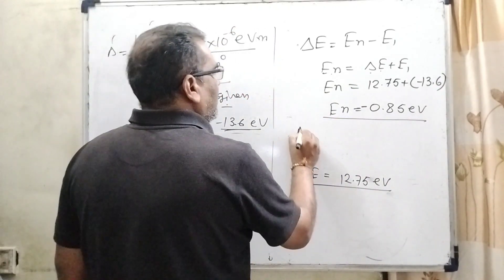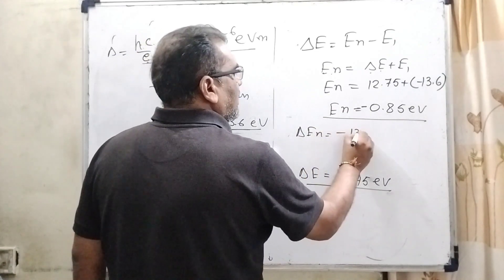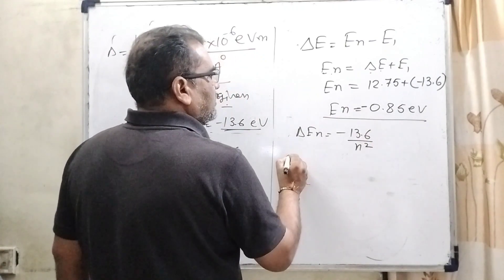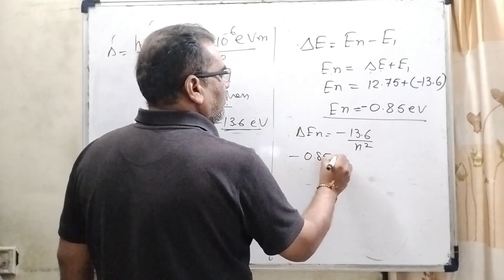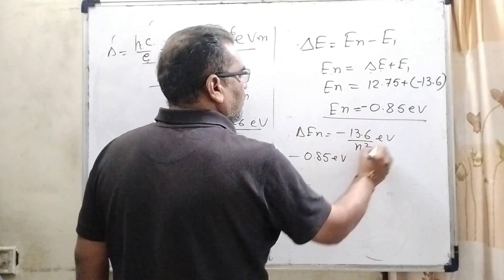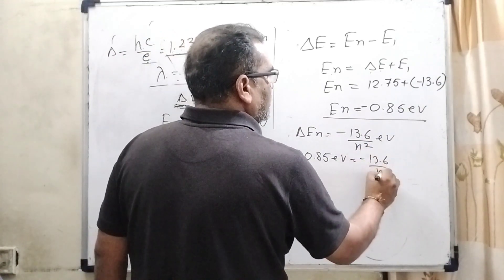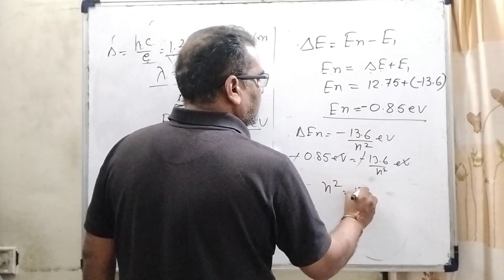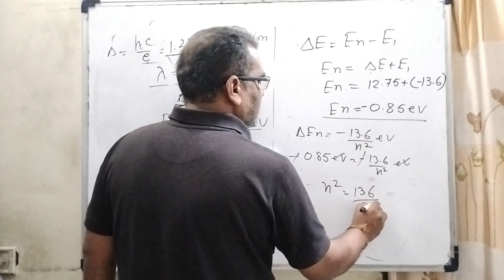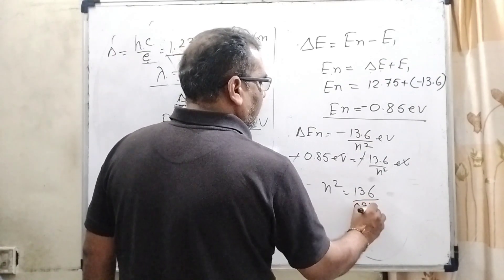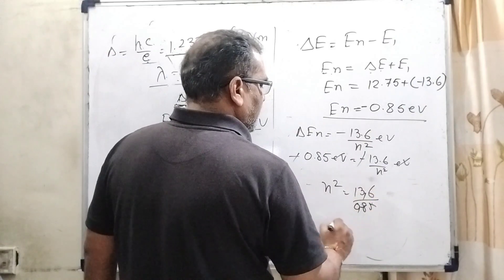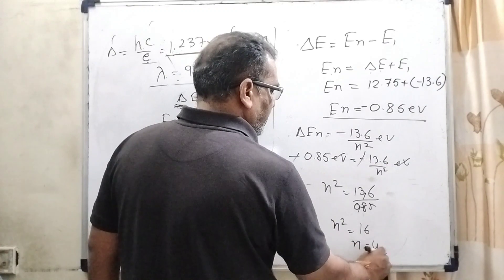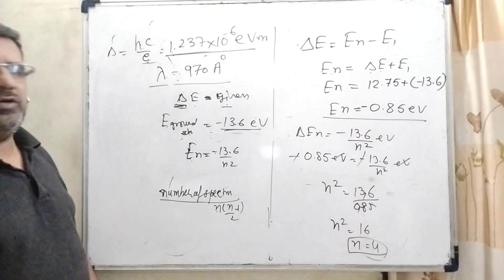Using the formula En = −13.6/n², substitute the value minus 0.85 electron volt. The electron volt units cancel out, and minus–minus cancels out. So n² equals 13.6 / 0.85, which gives n equal to 4.